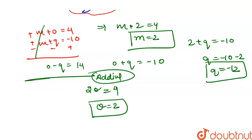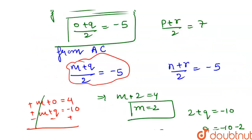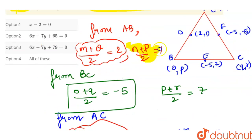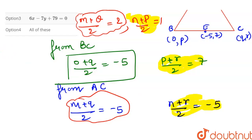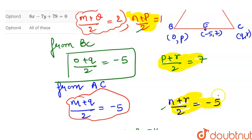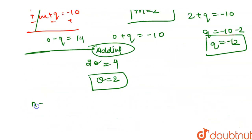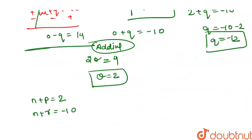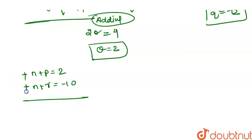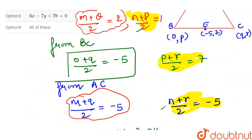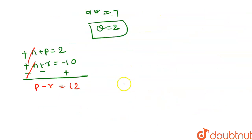Now we find the y-coordinates using: (n+p)/2 = 1, (p+r)/2 = 7, and (n+r)/2 = -5. So: n+p = 2, p+r = 14, and n+r = -10. Taking the first and last: n+p = 2 and n+r = -10. Subtracting gives p-r = 12.